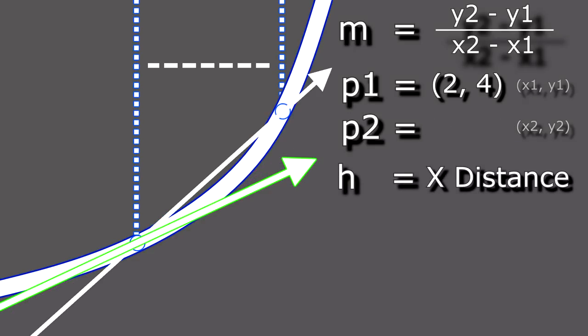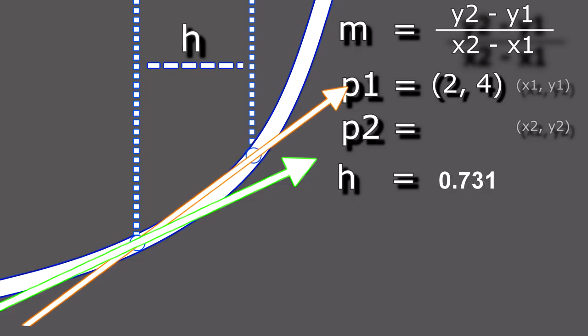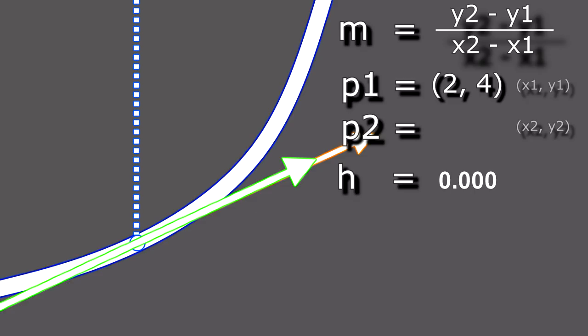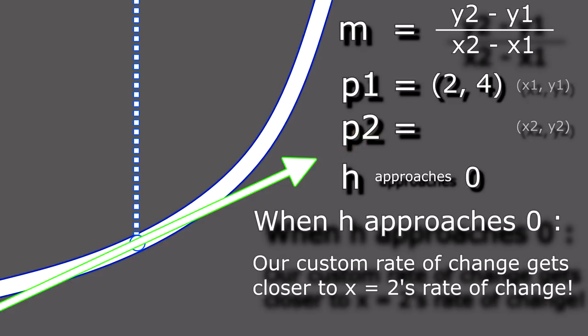So here's an idea, let's call the distance between the two points h. When the distance between the two points, or h, gets closer to zero, its line becomes more and more accurate to this line, the line we want. In other words, as h approaches zero, our line gets more accurate to the rate of change at x equals 2, a single point.